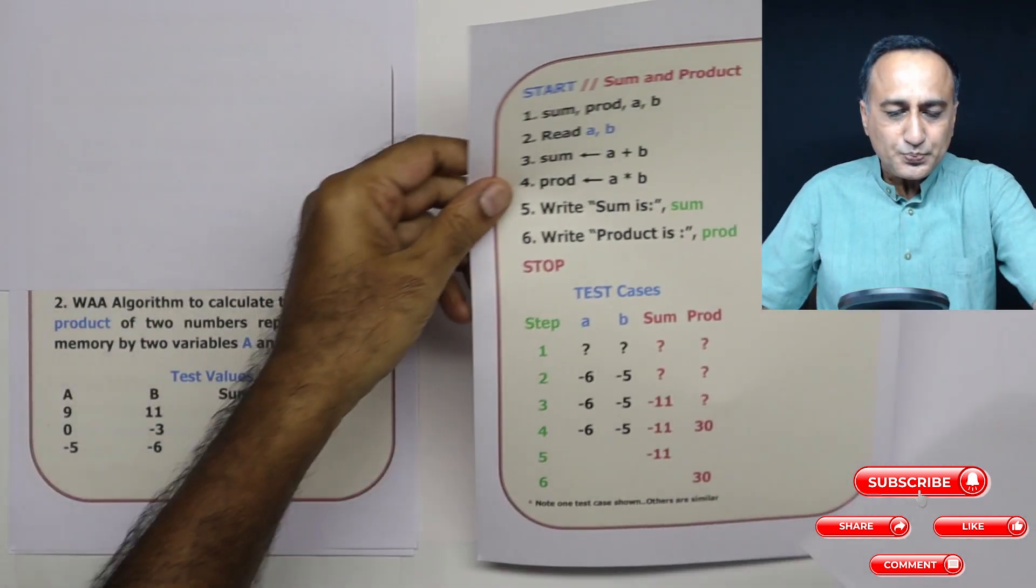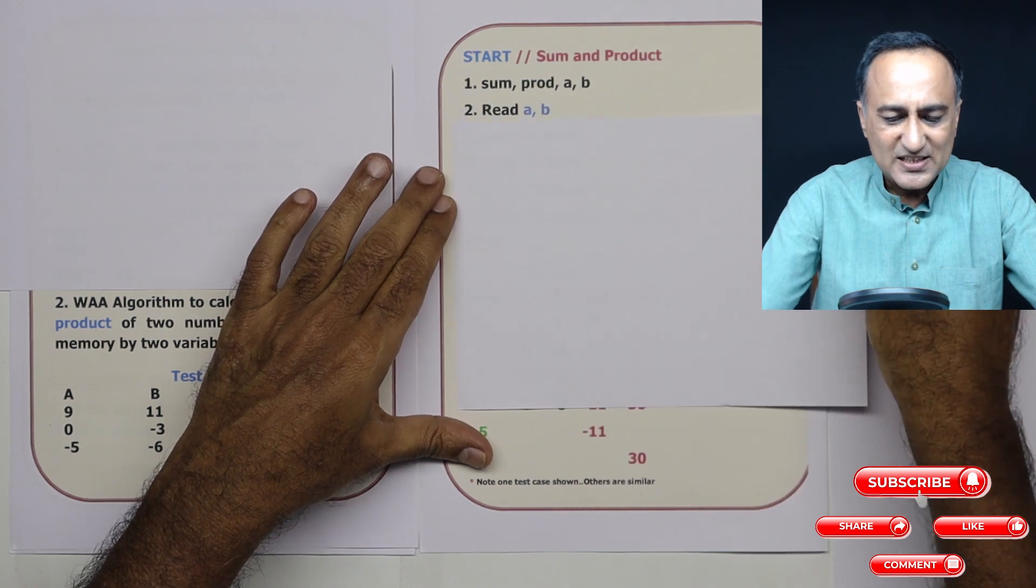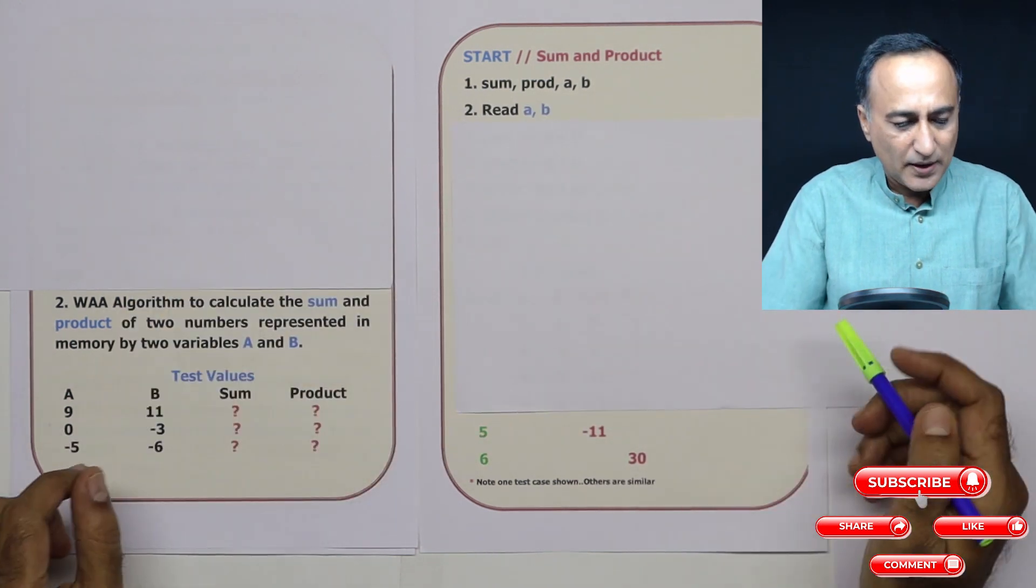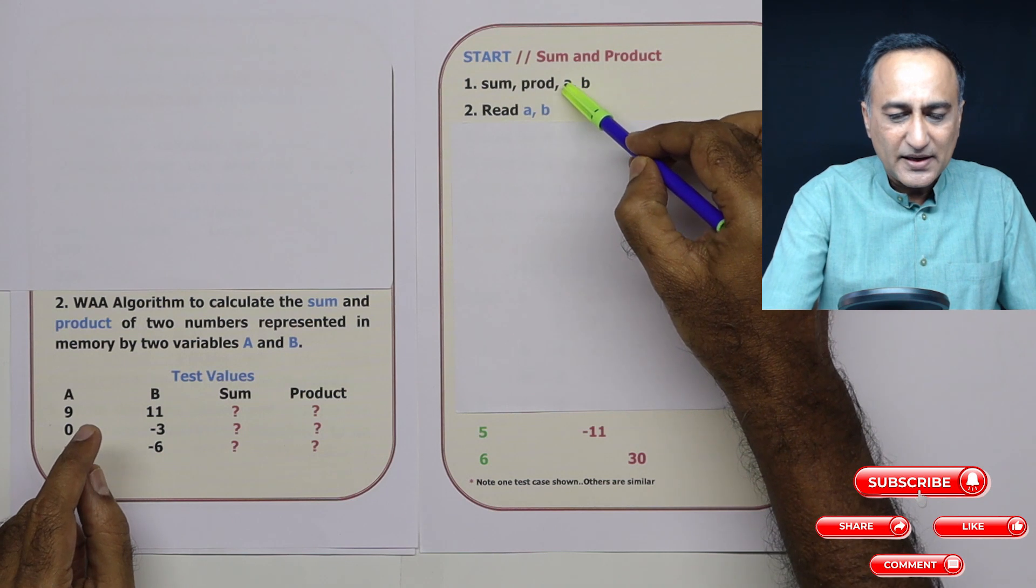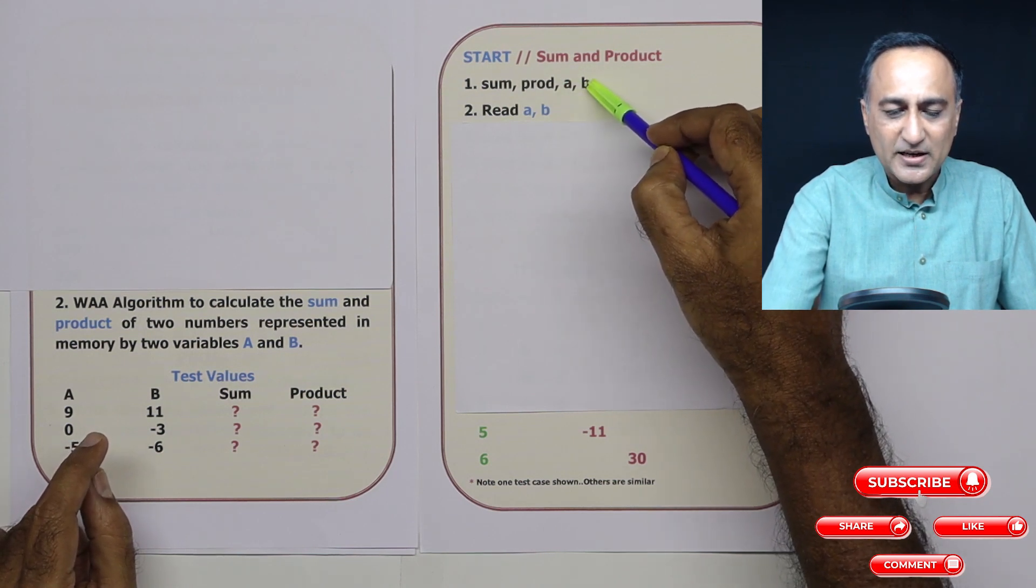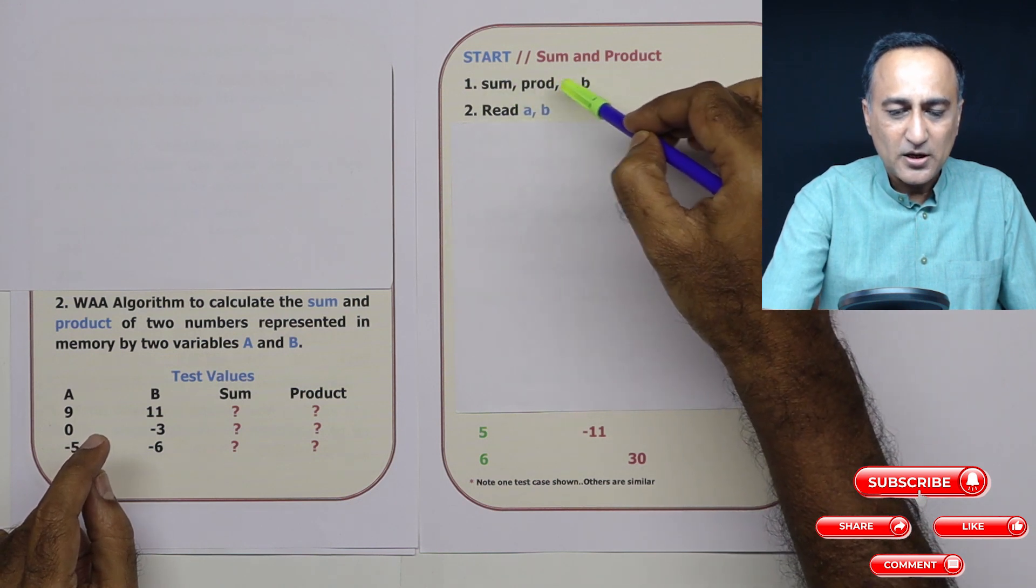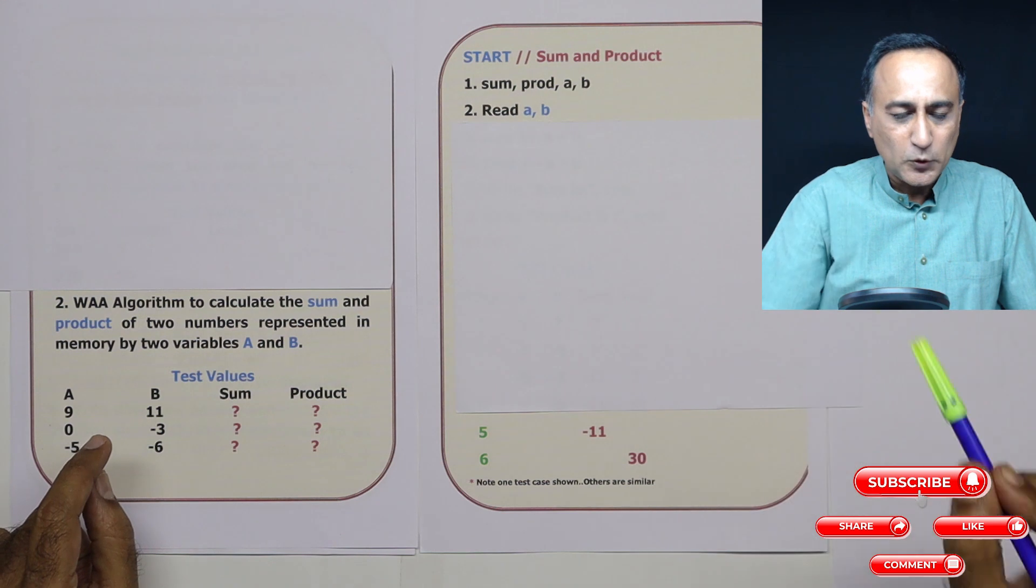Let's understand what variables are required. I require variable A for the first number, variable B for the second number, variable sum to store A plus B, and product to store A times B.